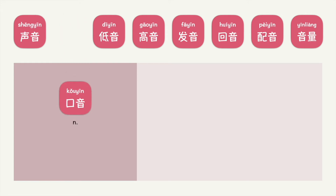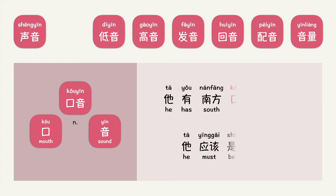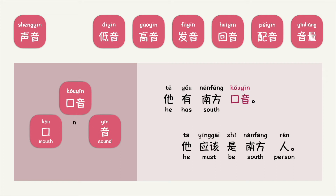口音. 口音 is a noun. 口 means mouth, 音 is sound. Put into context, you can say: 他有南方口音，他应该是南方人。 Mouth sound — what do you think 口音 means? 口音 refers to an accent. This example translates as: He has a southern accent; he must be a southerner.